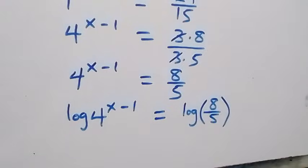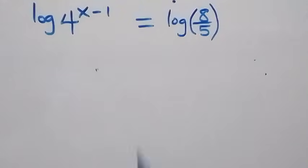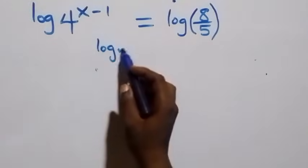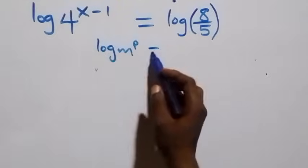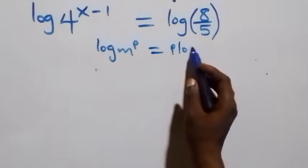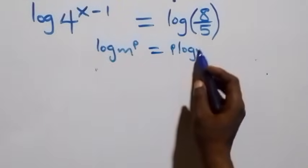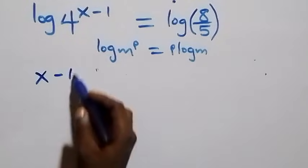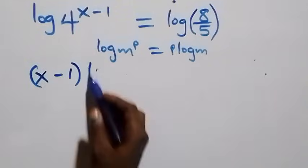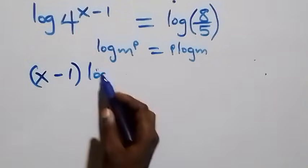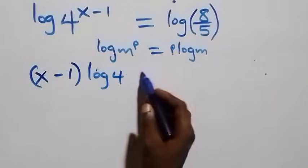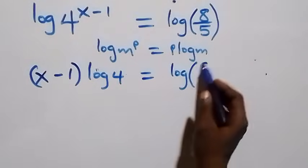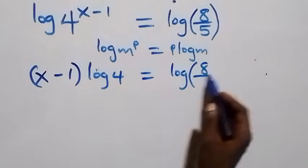Then, next step, we apply the power rule of logarithm, where we have log m raised to power p is the same as p times log m. So here, whatever we have becomes x minus 1 times log 4, equals to log of 8 over 5.